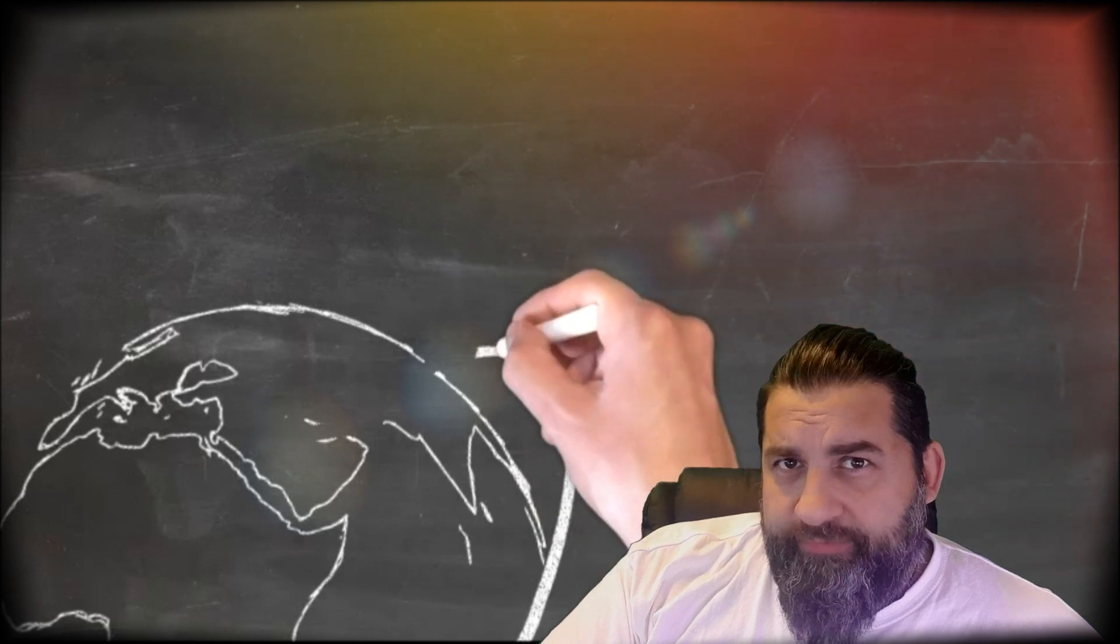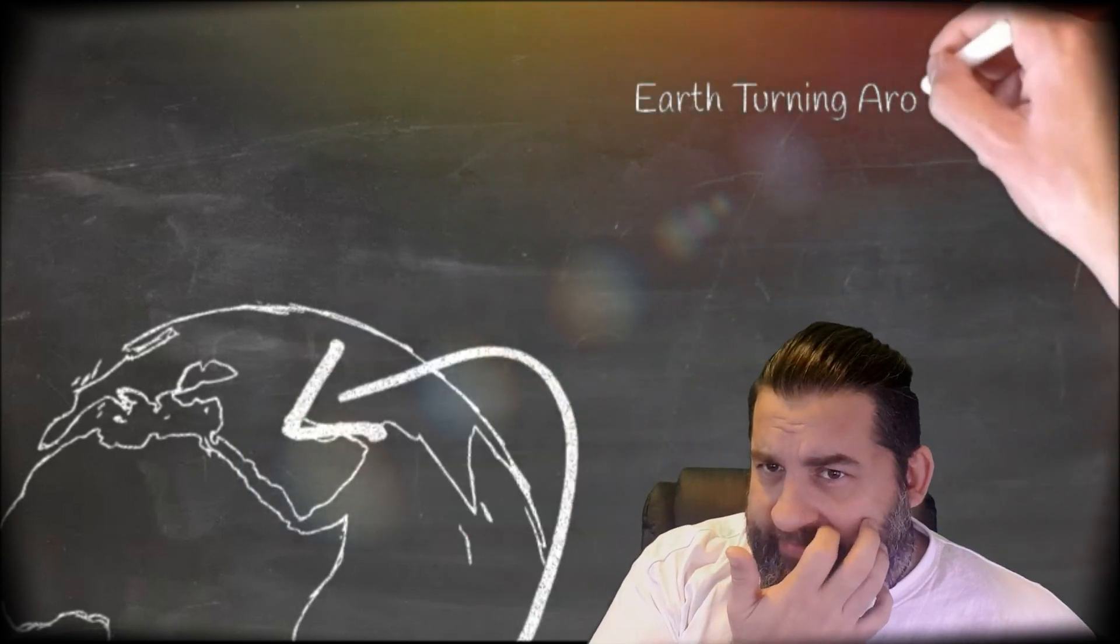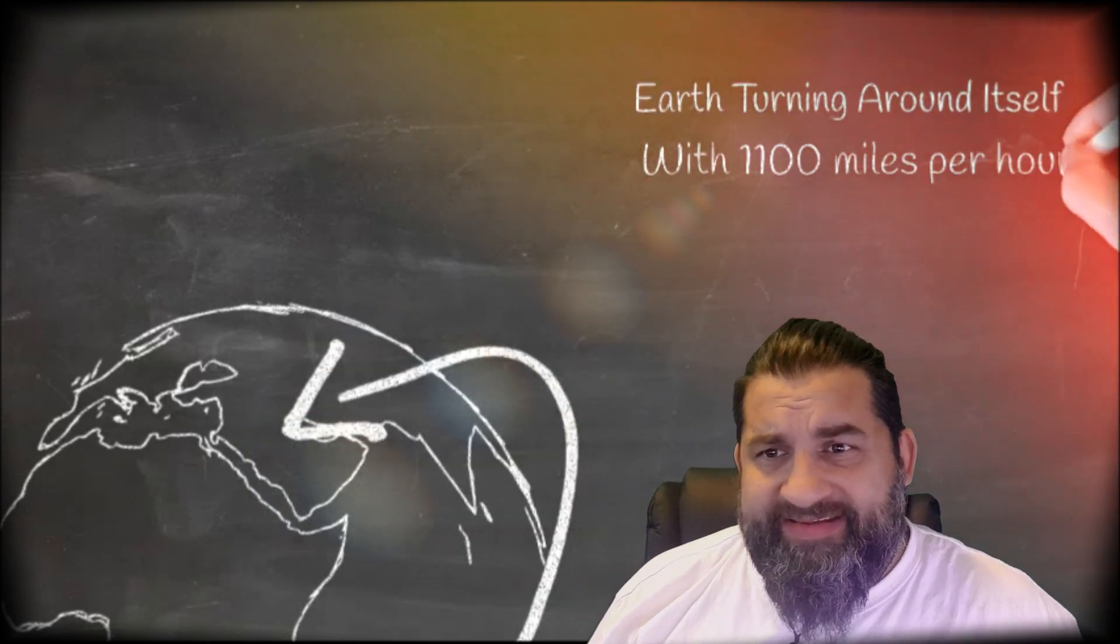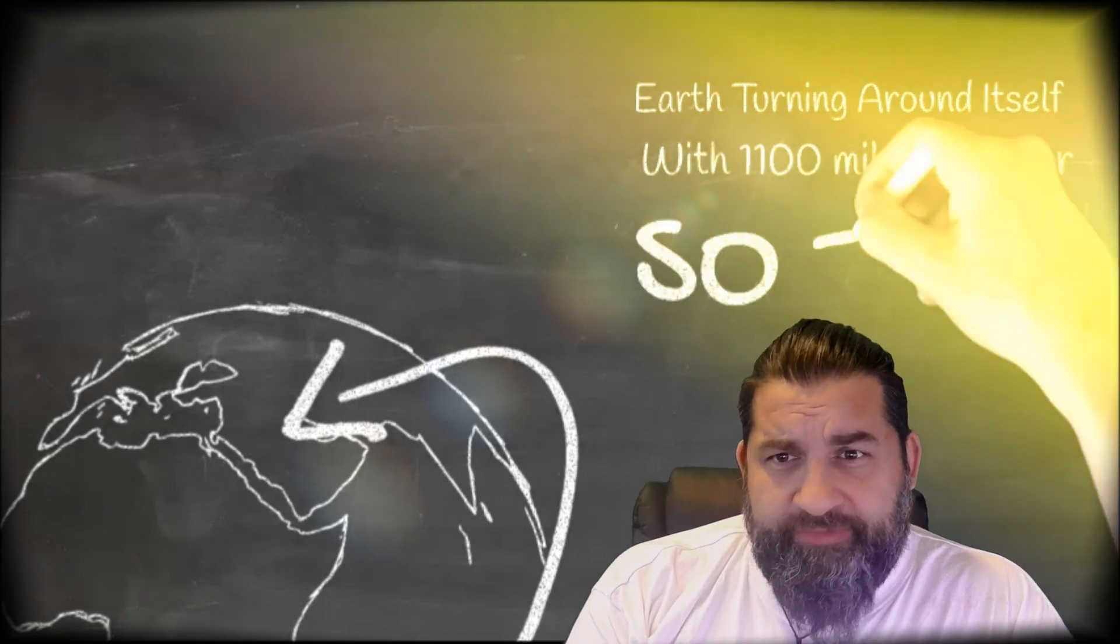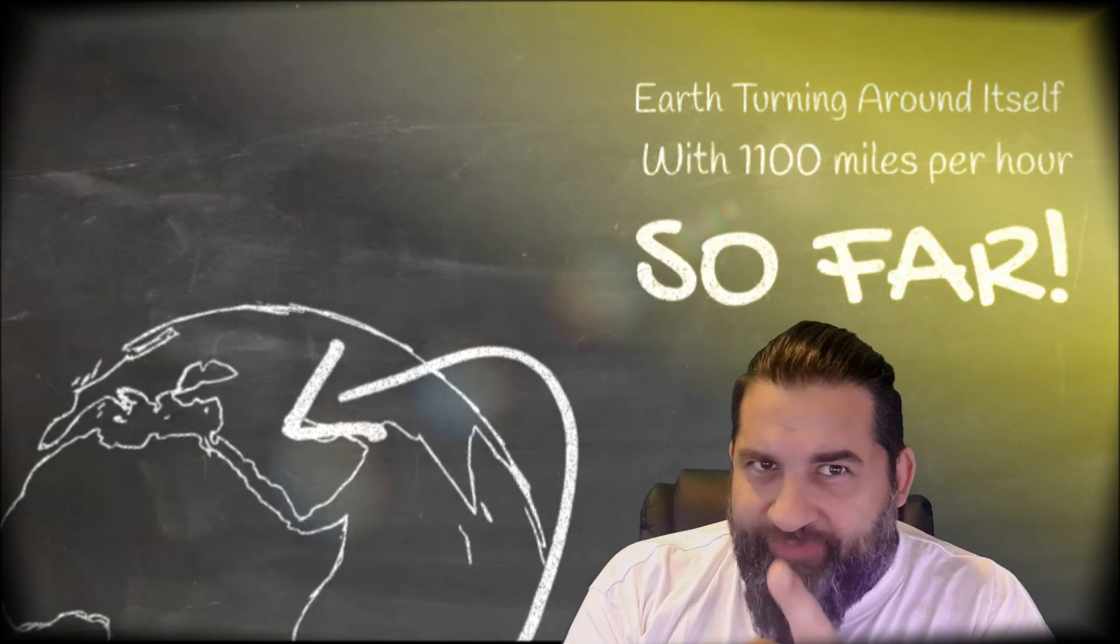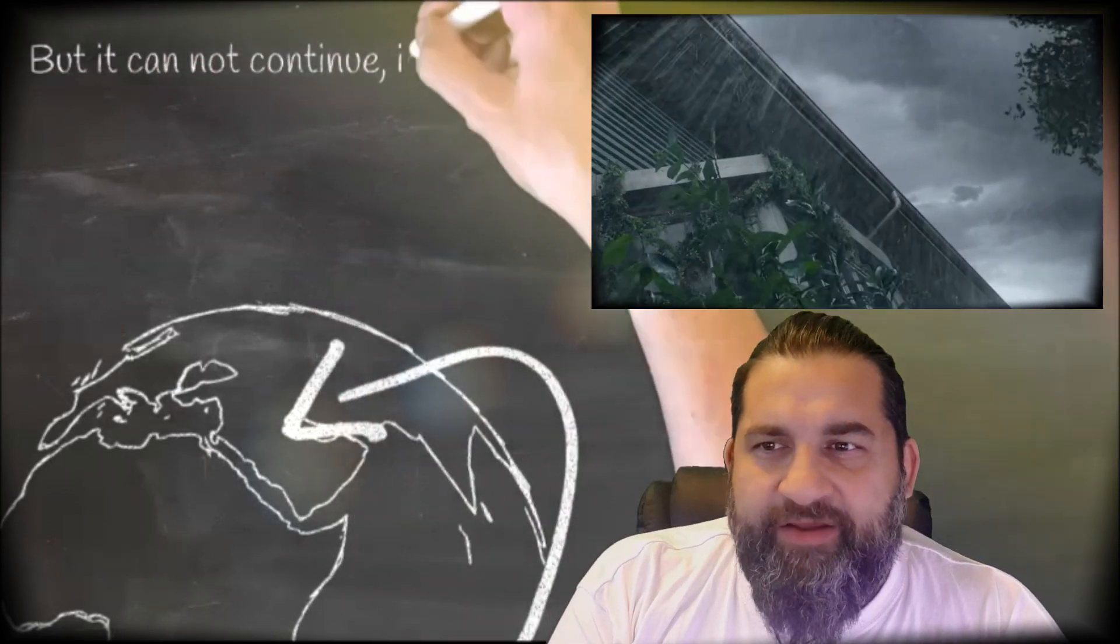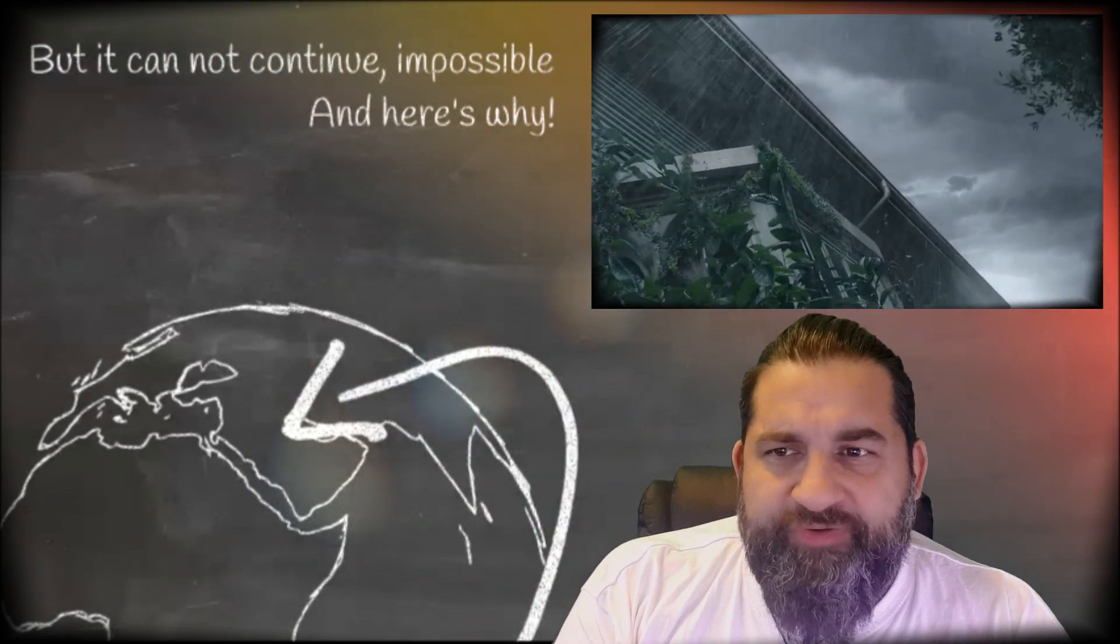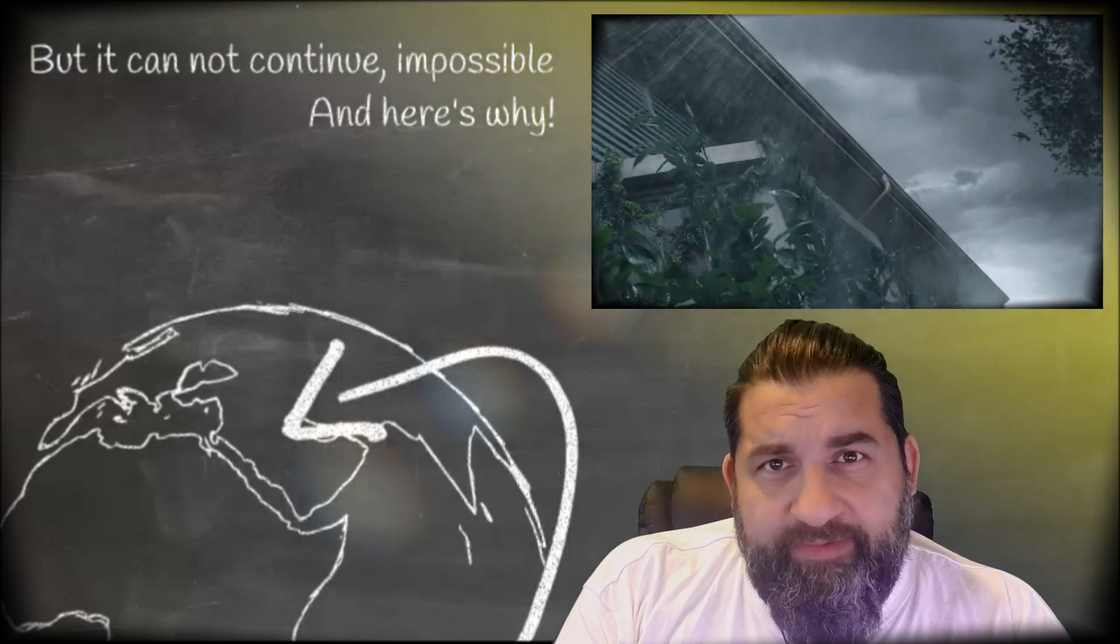Now, this is the Earth, our planet, and it's turning around itself at 1,100 miles per hour. So far, so good. But this cannot go on. It's impossible, and here is why.